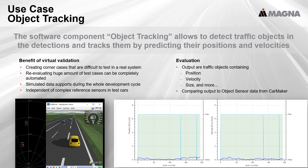The next example is the software component object tracking. It allows detecting traffic objects in the detections and tracks them by predicting their positions and velocities. For this component, we can also create corner cases easily that are difficult to test in the real world. Furthermore, reference sensors like differential GPS are required in real tests. In CarMaker, we can simply compare the output of the object tracking with the object sensor — both provide objects with position, velocity, and size. On the left side, you can see a test case where the ego car is entering the highway. The orange boxes on the black background are the tracked objects, based only on the detections of the radar raw signal interface.